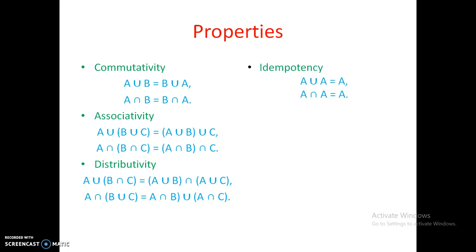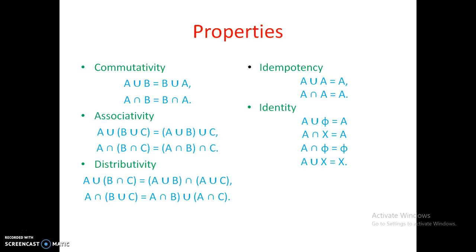Idempotency means A union A is equal to A, and A intersection A is also equal to A. Since A is only one set, A union A always gives you A, and A intersection A always gives you A. This is called the idempotency property.